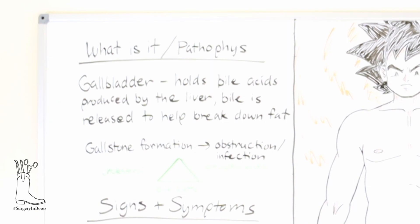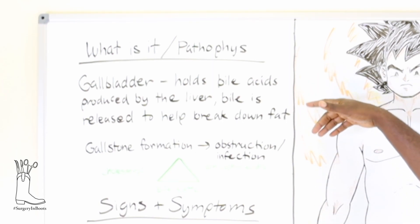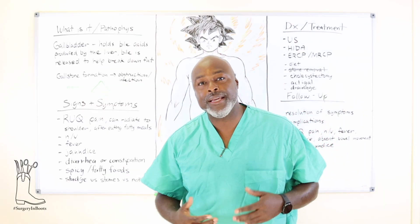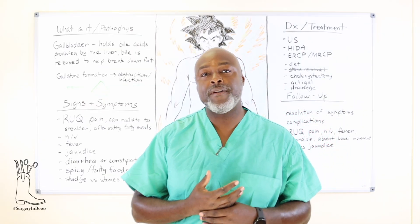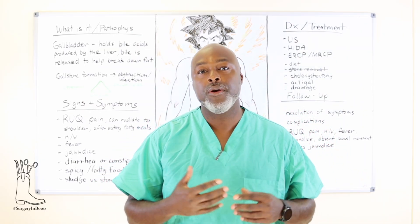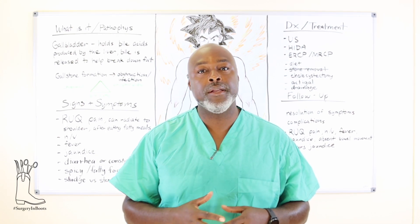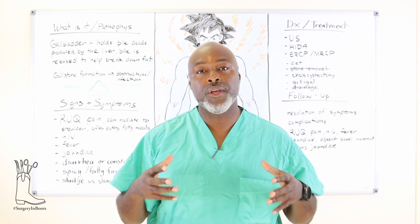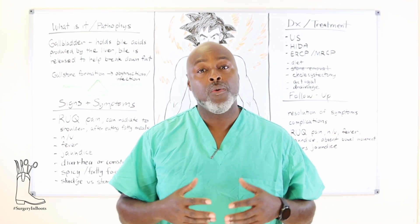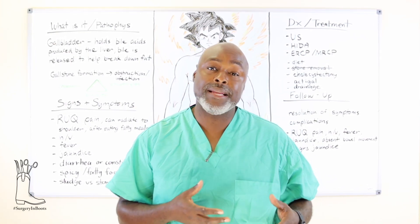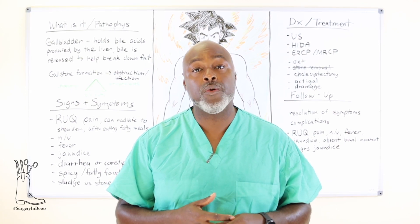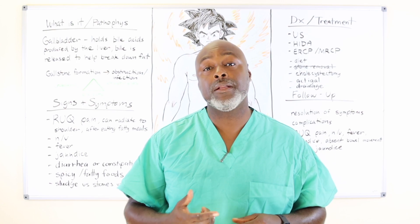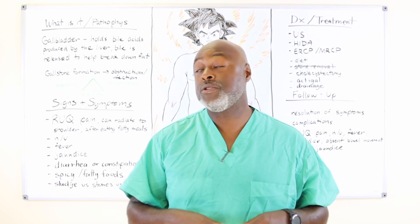The gallbladder holds bile acids produced by the liver that are released when it's time to eat a spicy or fatty meal. So let's say you go eat a hamburger, piece of pizza, fried chicken — your body can't handle that amount of fat all of a sudden. The gallbladder stores bile, which is released when you eat a spicy or fatty meal to help your body digest it. That comes into play later when we talk about symptoms.